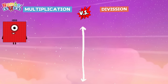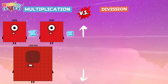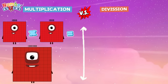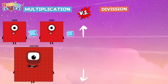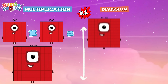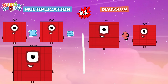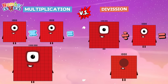One thousand multiplied by one hundred is equal to one million. One million divided by one thousand is equal to one thousand.